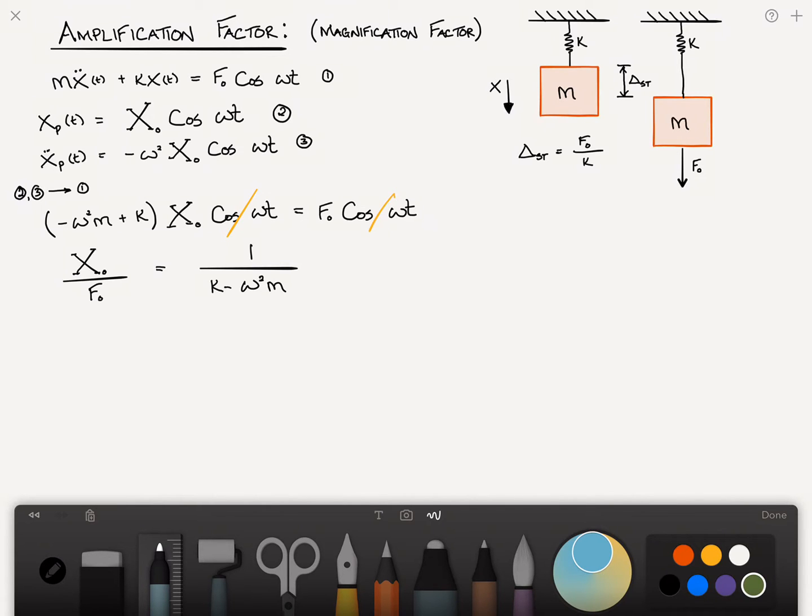And now, just a little trick, we're going to multiply both sides by k. And then, we can rewrite this as x sub zero divided by f sub zero over k is equal to k. And out of the denominator, I'm going to remove k as a factor. So it's k into 1 minus omega squared m over k.